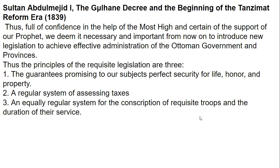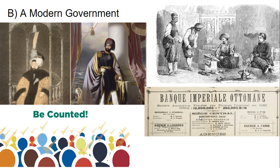Here are some of the reforms being passed. We're going to see equal protection under the law and a regular system of taxes. We're going to see conscription — forced military service — and all these pieces from the French Revolution brought into the Ottoman Empire, all absolutely necessary for modernizing the Ottoman state and making them effective. We're also going to see an adequate census in order to assess tax revenue.